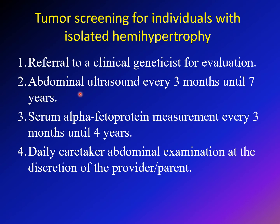For tumor surveillance in patients with isolated hemihypertrophy, refer to genetics to determine if it's an isolated case or part of another syndrome. Screening includes abdominal ultrasound every three months until the age of seven years, and serum alpha-fetoprotein every three months until the age of four. These numbers may vary across references, but most recommend abdominal ultrasound and blood work every three to six months for the first four years of life. It is also important that the caretaker performs abdominal examination to detect any abnormal swelling.